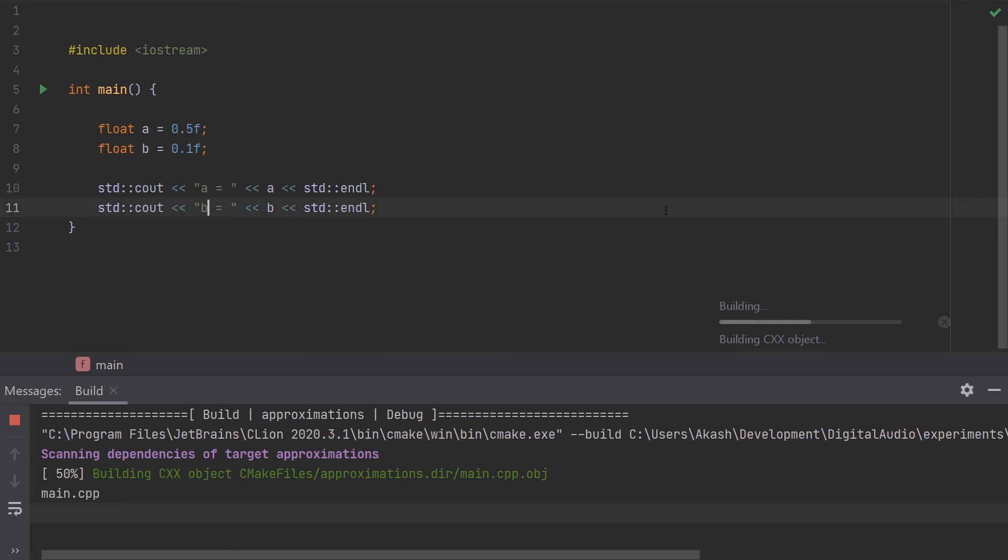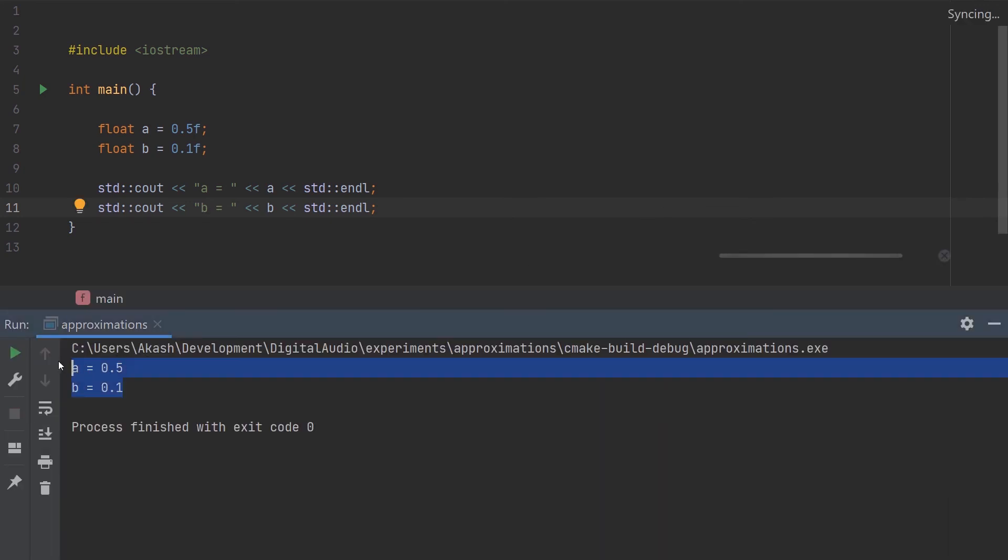If we just print out the values of these two variables, nothing changes, because cout on the stream operation on floats is approximating this for me.